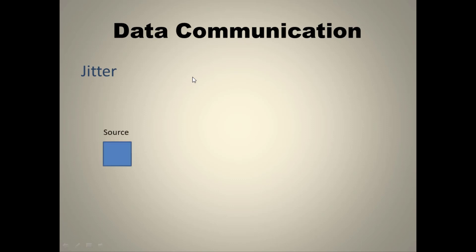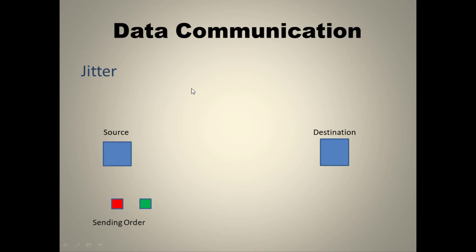The fourth characteristic is jitter. The source sends a few packets — green first, then red, then yellow — but at the destination, yellow arrives first, then red, then green. They are not received in the correct order. Jitter refers to this out-of-order arrival of packets, which should not occur.